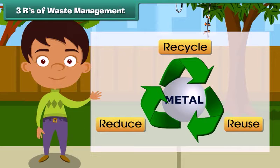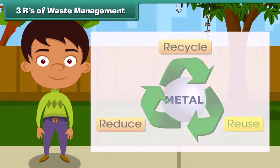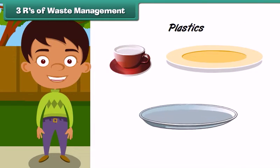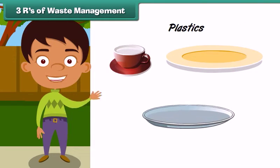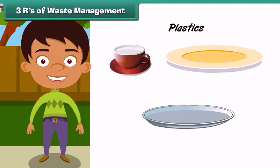The second R stands for Reuse. Reuse means to use an item more than once. Plastic cups, plates, and utensils are usually disposed of after a single use. Instead, we must reuse them after washing.